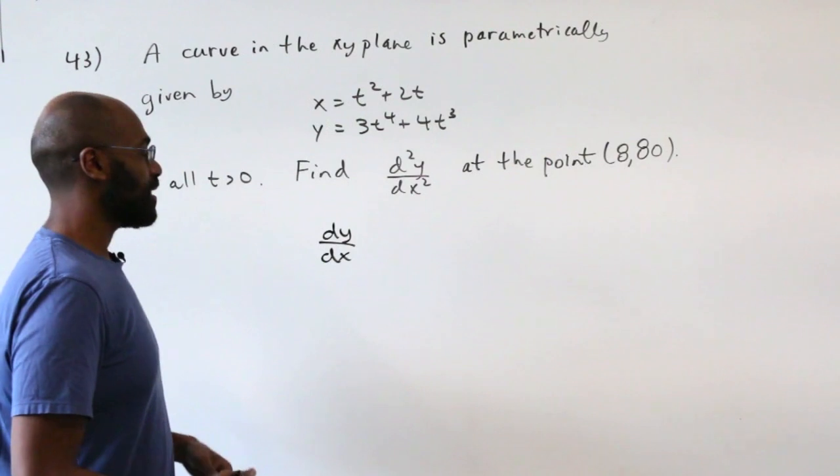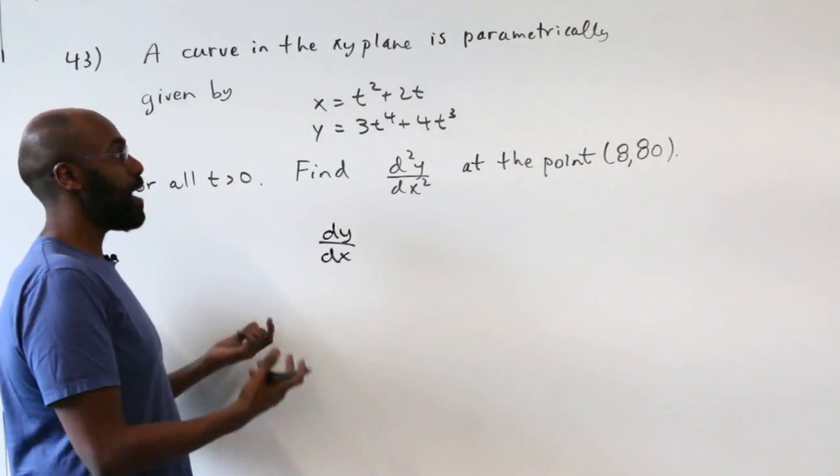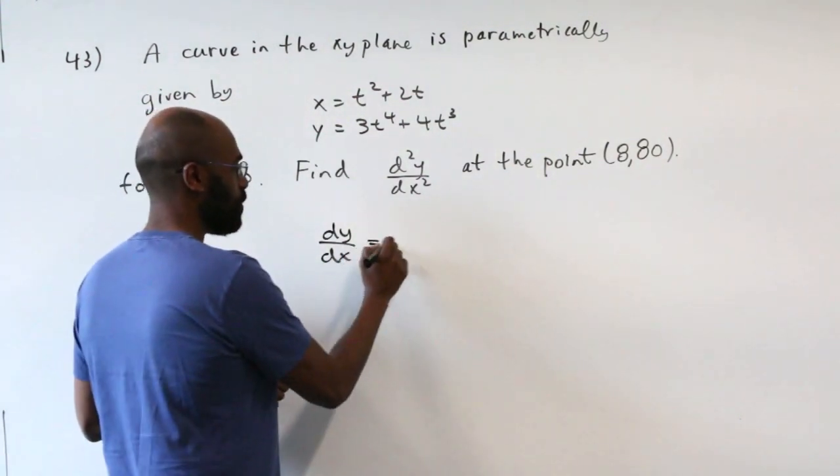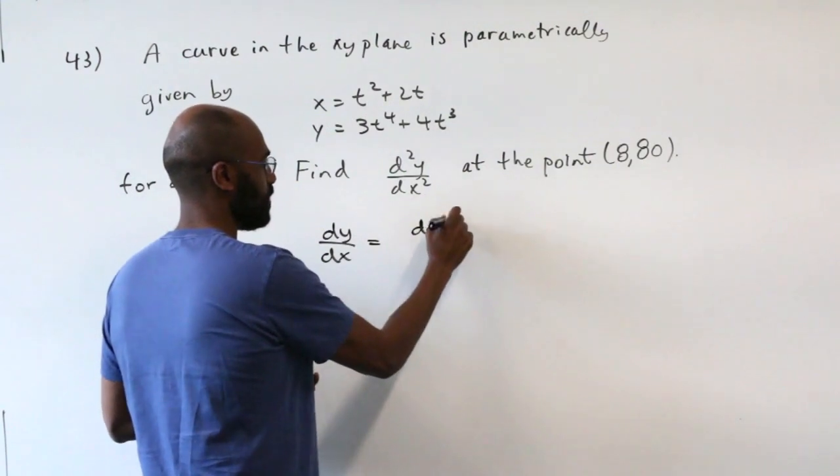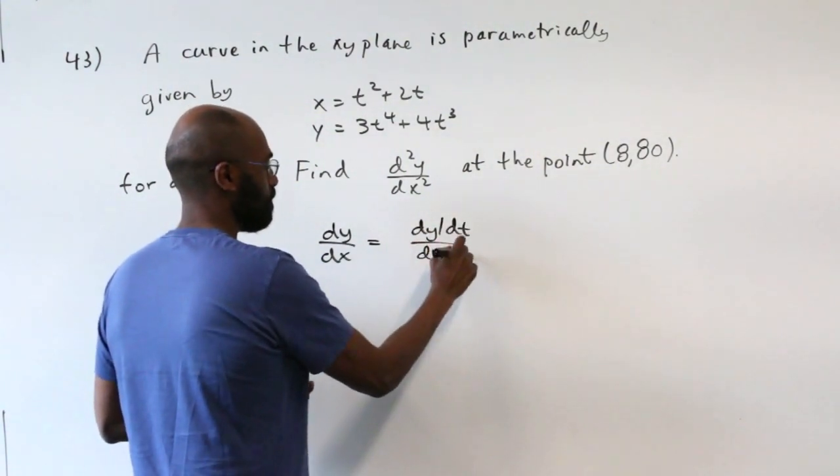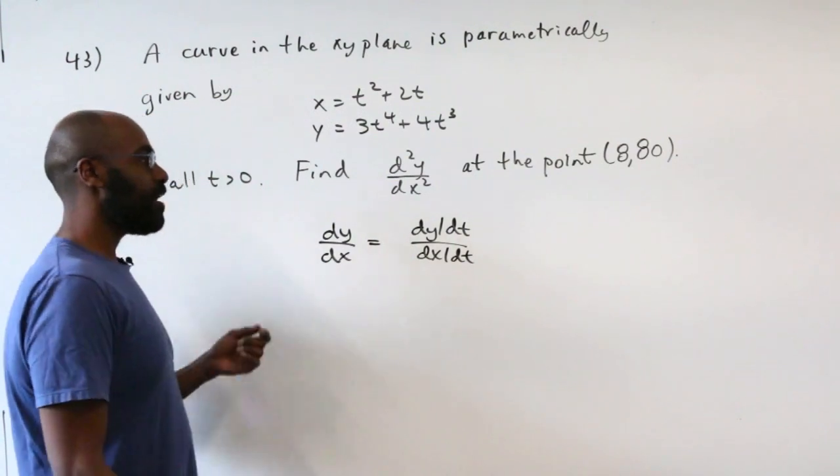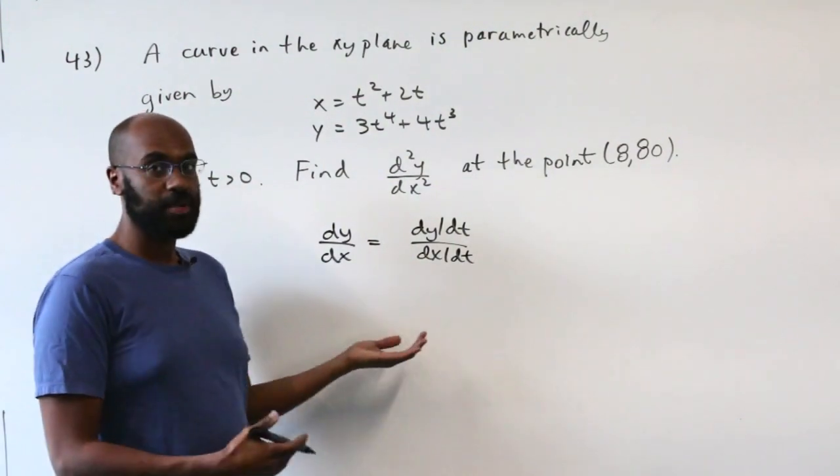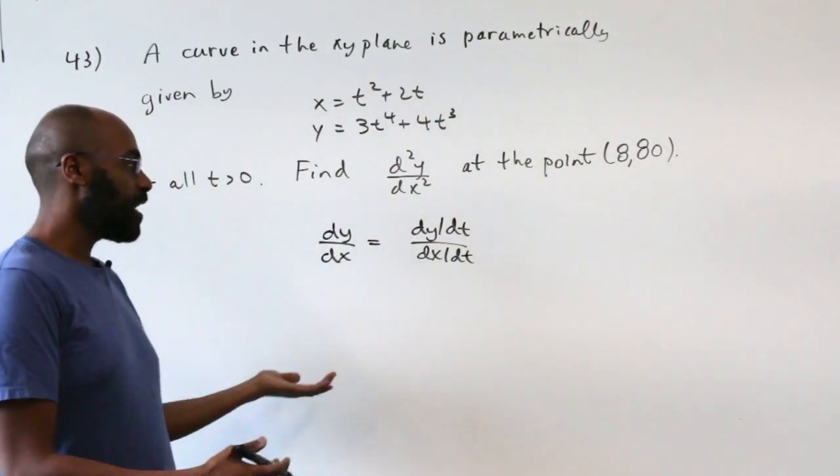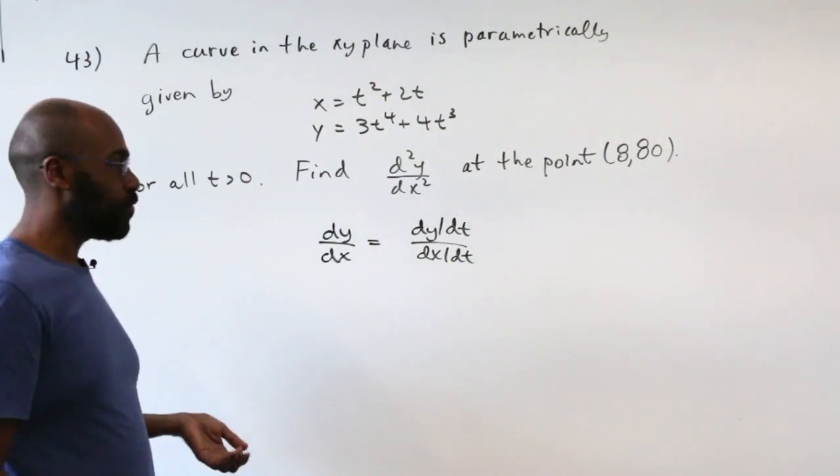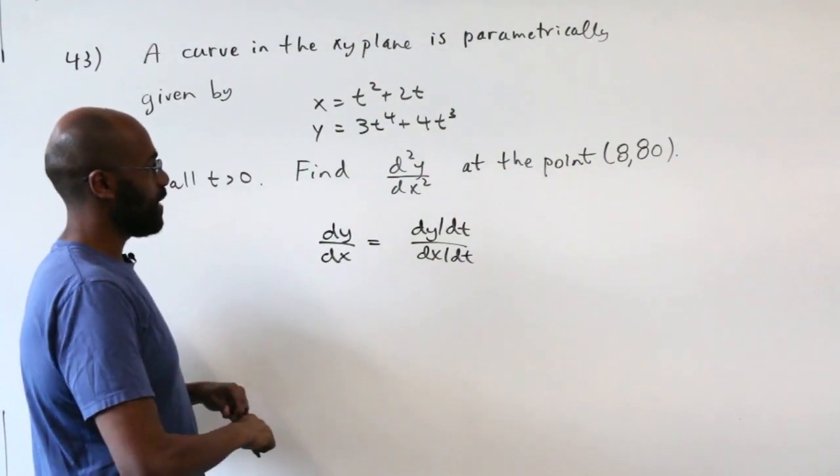So we have y and x explicitly as parameters of a variable t, so we should rewrite this really as dy/dt over dx/dt. Now, I understand this is kind of an abusive notation, but it's typically used in multivariable calculus. That's a quick way for us to just get through this when we're working on the GRE math subject test.